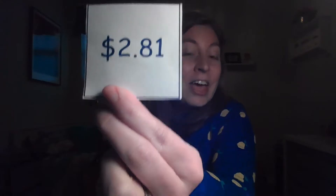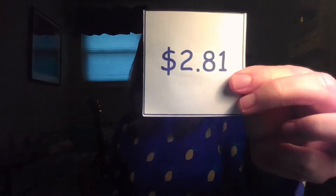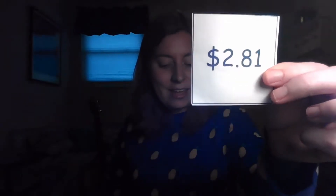We're going to the store. [Echo: We're going to the store.] We're gonna buy some apples. [Echo: We're gonna buy some apples.] How much are the apples? [Echo: How much are the apples?] They're two dollars and 81 cents. [Echo: Two dollars and 81 cents.] How much money do we need? [Echo: How much money do we need?] Let's round up. Two dollars and 81 cents. [Echo: Two dollars and 81 cents.] How many dollars? [Echo: Two dollars.]